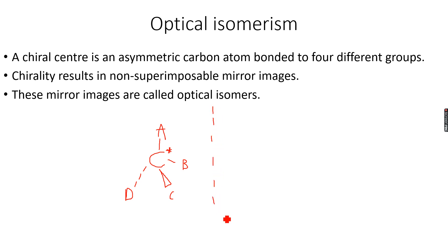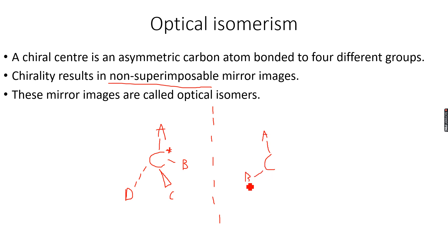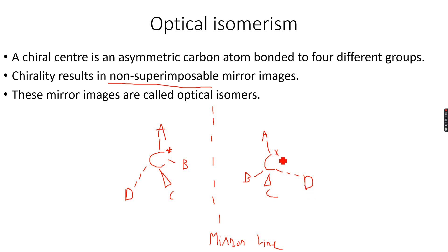A chiral center has an optical isomer, which is basically a non-superimposable mirror image — you just need to know that it's a mirror image. I draw a mirror line here, and on the opposite side of the mirror line you place the mirror image: A, then B, then C, then D. These two molecules are called optical isomers.